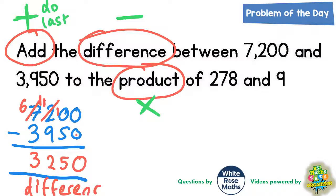Now before we can do the adding bit we need to find the product. So the product of 278 and 9 means do 278 times 9. Let's work that out. 8 lots of 9 is 72. Put the 2 in, carry the 7.